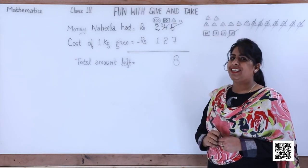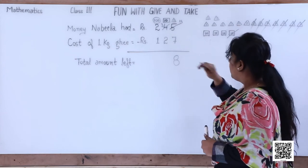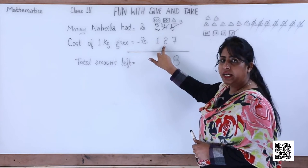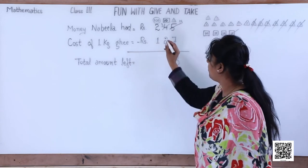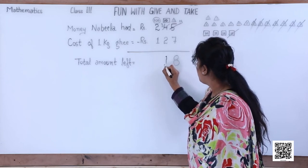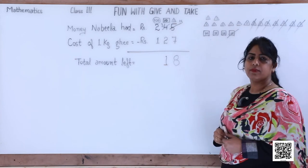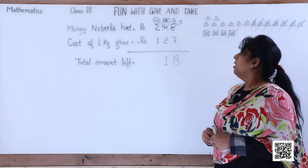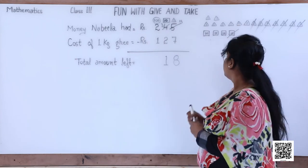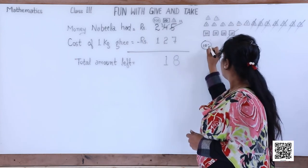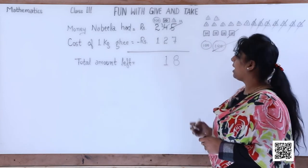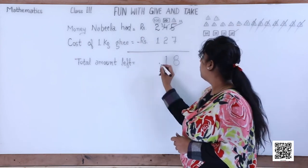Now we are left with three tens, and we have to subtract two tens. So we are left with one ten. For hundreds, we have two hundreds and we subtract one — so one hundred is left.